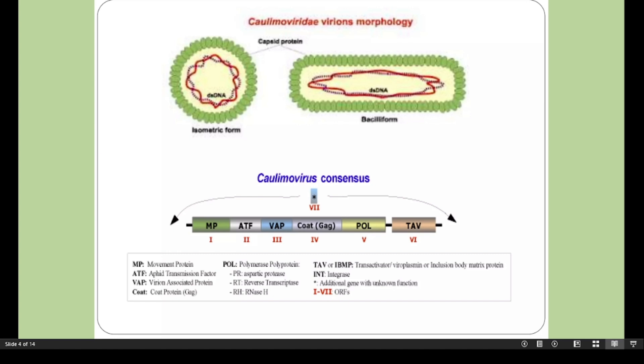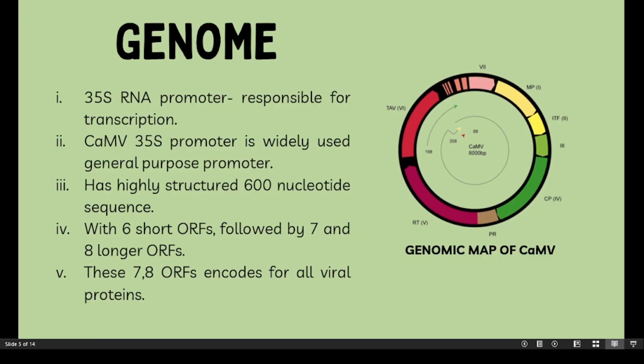Now we move on to the genome of Cauliflower Mosaic Virus. The promoter of the 35S RNA is a very strong constitutive promoter responsible for the transcription of the whole Cauliflower Mosaic genome. It is well known for its use in plant transformation, causing high levels of gene expression in dicot plants. It is less effective in monocots, especially in cereals.